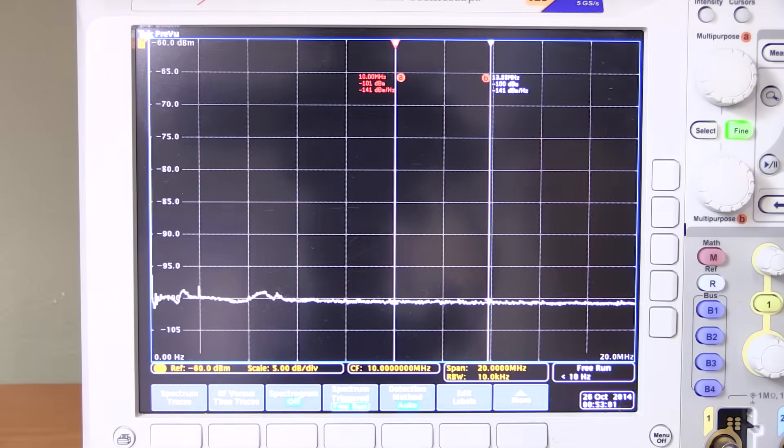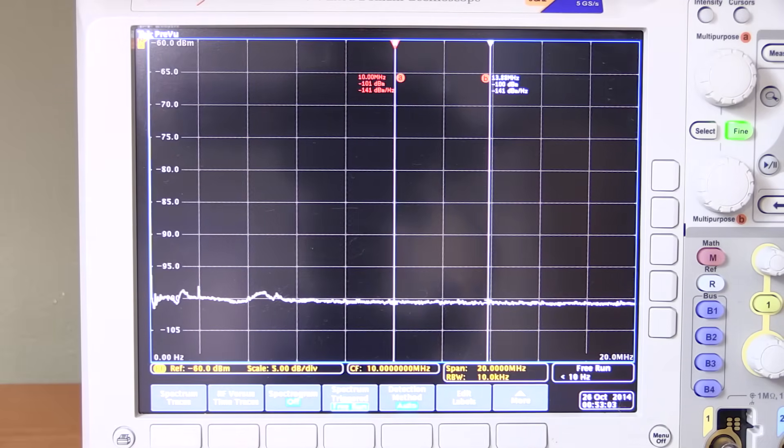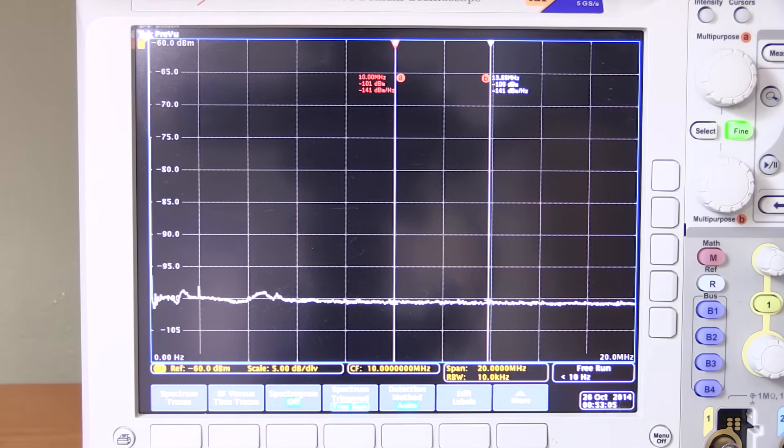So again, there's nothing at the input. And the output goes directly into the instrument. And we're seeing here, negative 101 dBm. And this instrument also shows the spectral density as dBm per hertz. That's really nice. Not every instrument does that. But we have this number here. So we actually have two numbers we can play with.